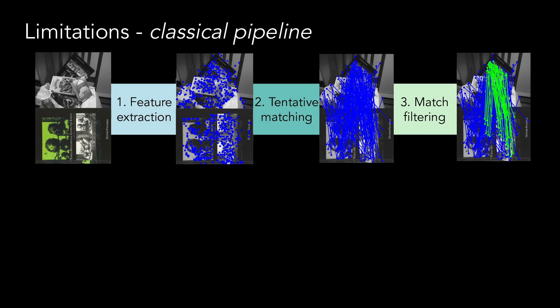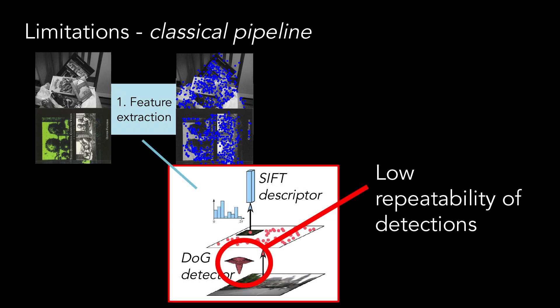Let's now analyze the limitations of this pipeline. The first stage can fail under large illumination changes, such as in the case of day-night matching, as the detector can suffer from low repeatability, limiting the possibilities of obtaining correct correspondences in the later stages.